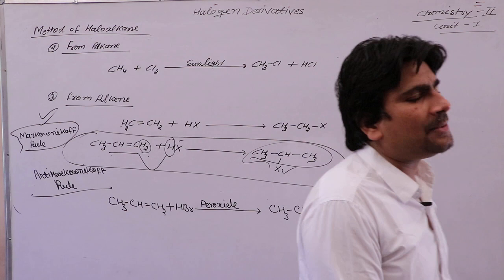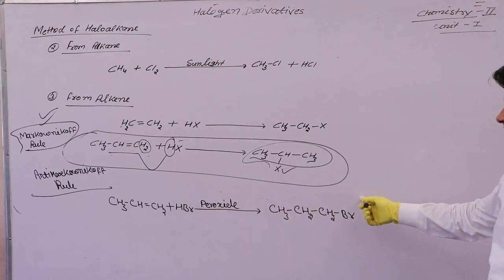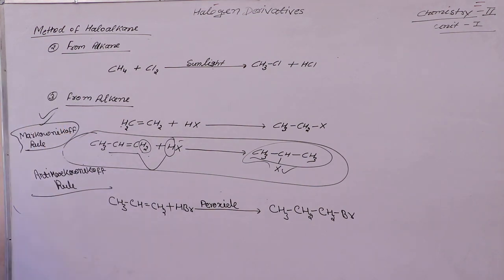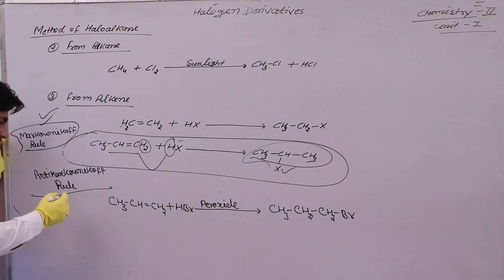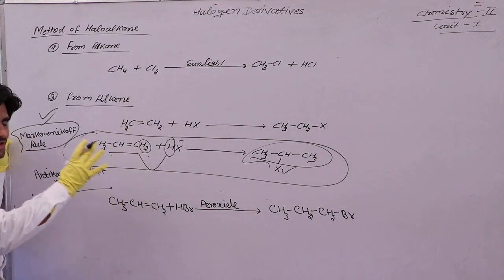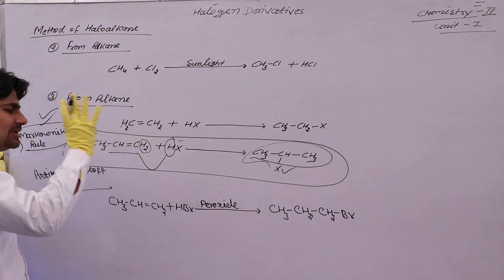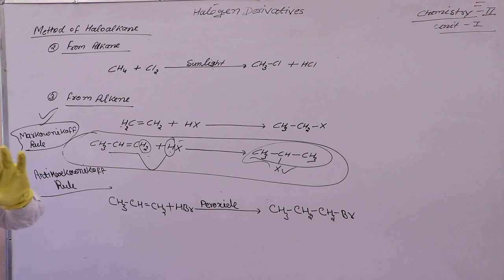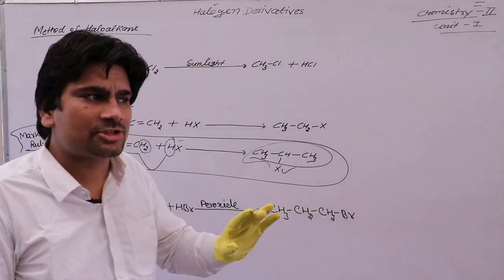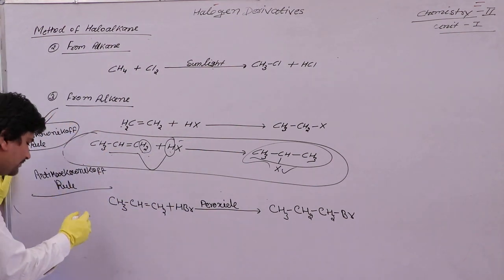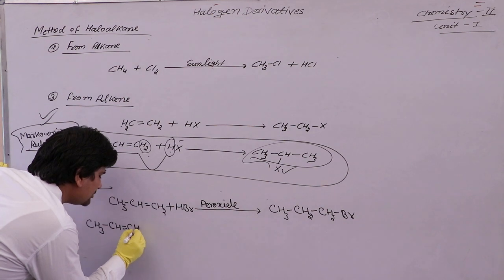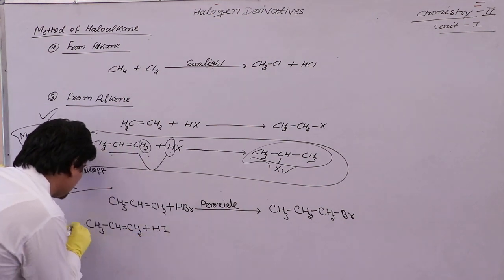The IUPAC name of the product is 1-bromopropane. Next, we will see RBSC board questions on these reactions. First question: CH₃CH=CH₂ reacts with HCl — what is the product? Second question: CH₃CH=CH₂ plus HBr in the presence of peroxide — what is the product? This second question came in RBSC in 2015, and the first question came in 2018.